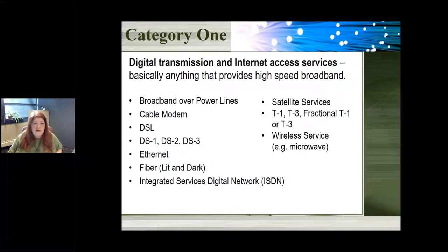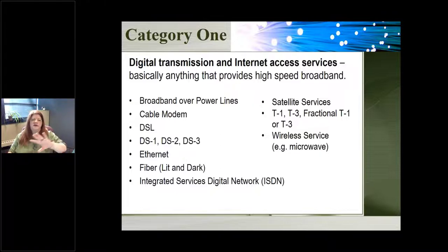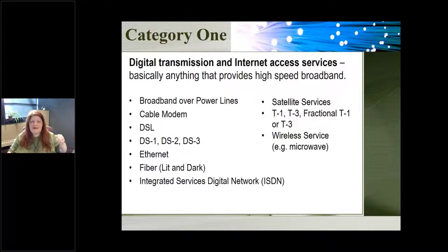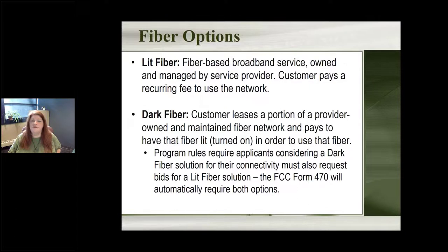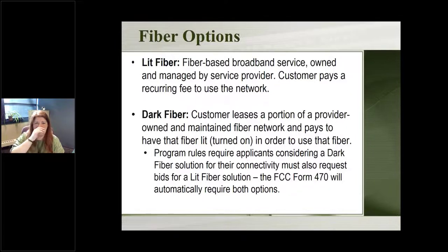Category one specifically covers basically anything that provides high-speed broadband internet to your building: DSL, fiber, cable modem, wireless, broadband over power lines — these are just some examples, not an exhaustive list. That's what the eligible services list will get you. Fiber is being deployed all over the country, and there are two different fiber options in the E-rate world: lit fiber and dark fiber. Lit fiber is service that's already out there and available — you contact a company and connect to it. Dark fiber is portions of fiber optic lines that are out there but haven't been turned on yet.